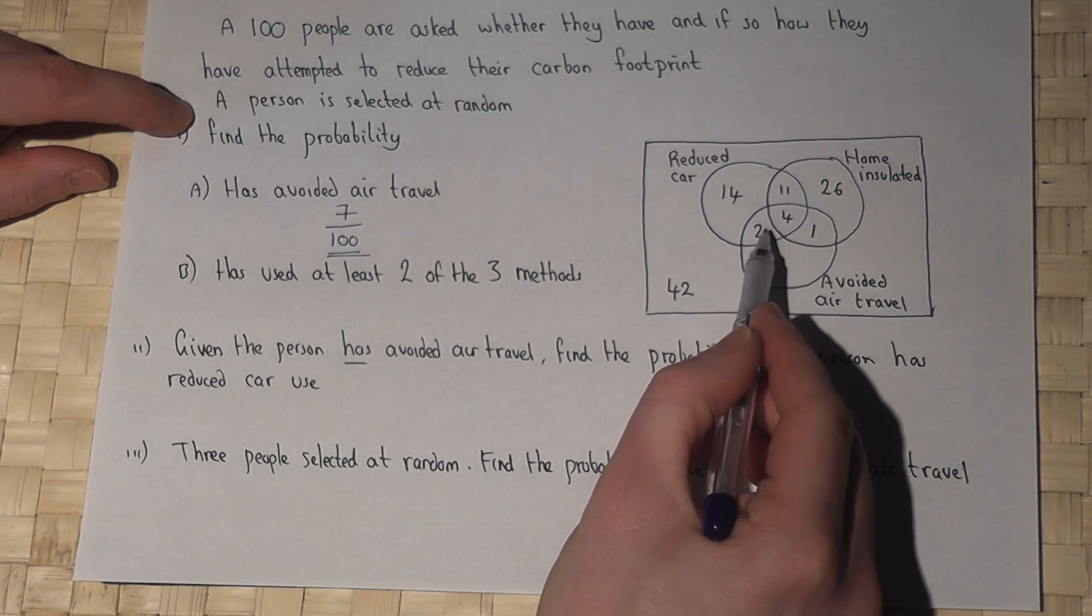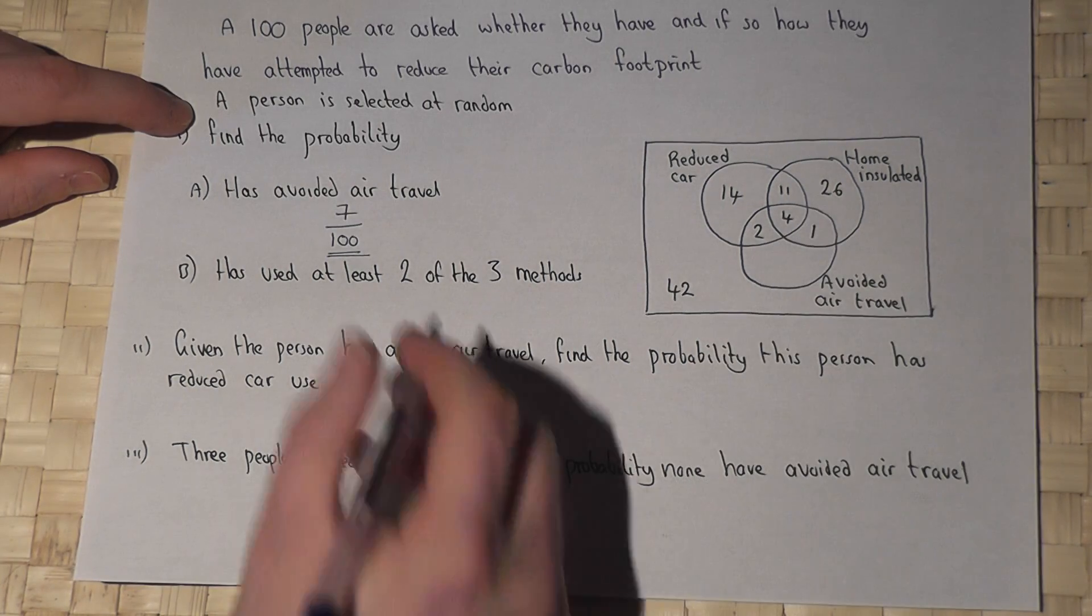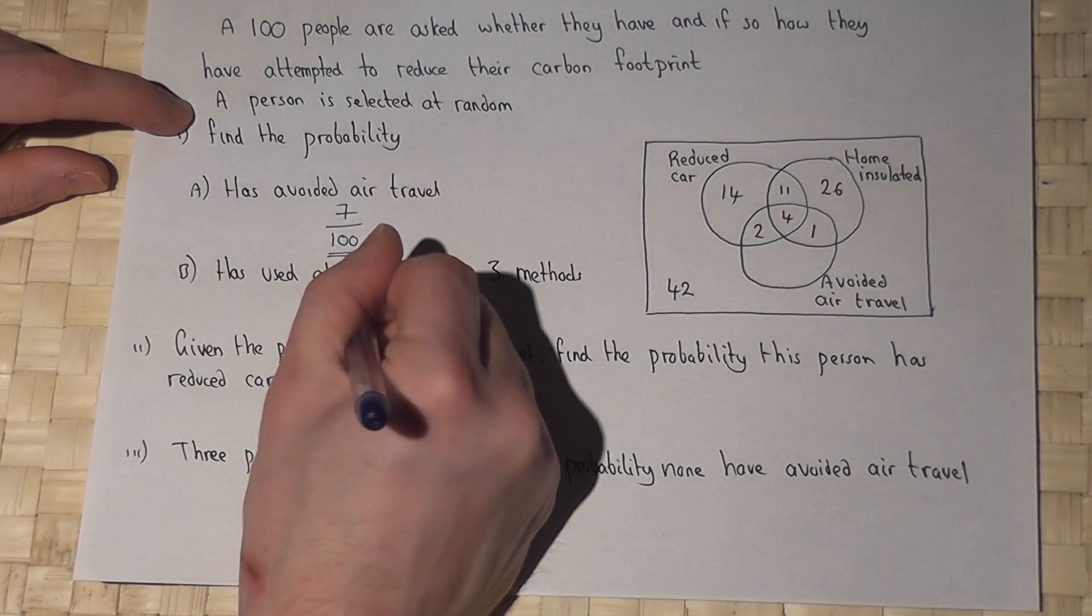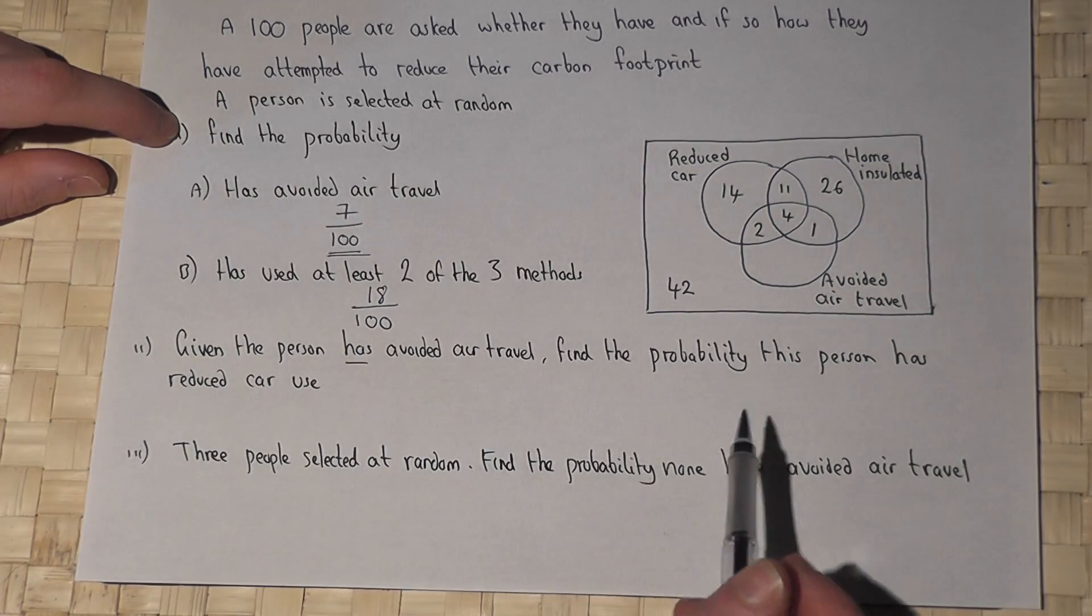So 11, 12, 13, 14, 15, 16, 17, 18. The answer is 18 out of 100, again because there were 100 people in total.